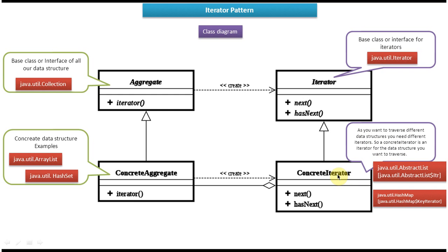If you are using ArrayList, you have to use one kind of iterator to traverse through it. If you are using a Set, you have to use another kind of iterator to traverse through the Set. The Concrete Aggregate creates a Concrete Iterator — if you call the iterator method, it provides a concrete iterator.